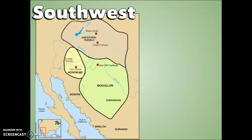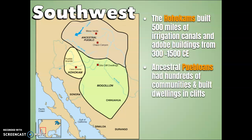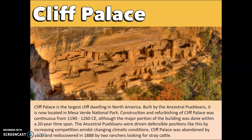Now we are on to the Southwest. The Hohokam built 500 miles of irrigation canals and adobe buildings from 300 to 1500 CE. The ancestral Puebloans had hundreds of communities that built dwellings into cliffs. The Hopi, Acoma, and Zuni people are all Puebloans. The Mogollon are related to the Acoma, Hopi, and Zuni people. The Puebloans share common agricultural, material, and religious practices. Pueblo means village in Spanish and was used to refer to the people's style of dwelling. This area is called Cliff Palace — the largest cliff dwelling in North America that we have found so far. You can see the top of the cliff and how the city is sort of built into it. Pause if you want to read more about it.